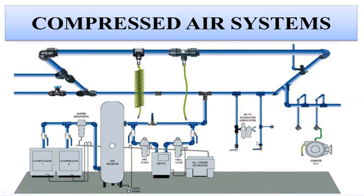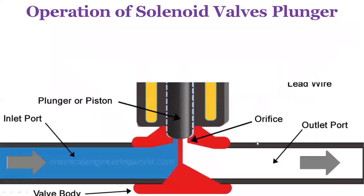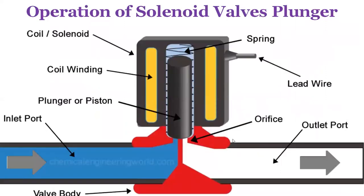The applications of compressed air are plenty, such as operation of solenoid valves. There is a typical air inlet port and an outlet port, and the spring operates the solenoid valve plunger — a most common industrially operated application.